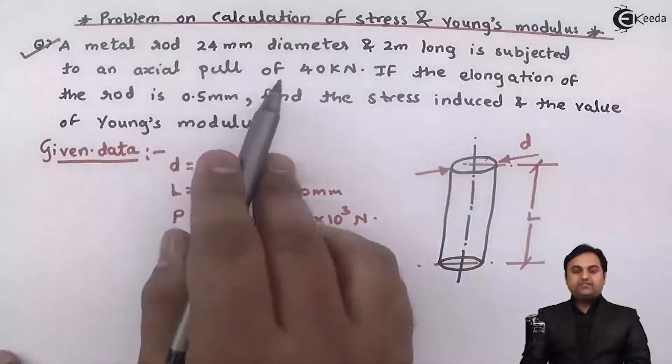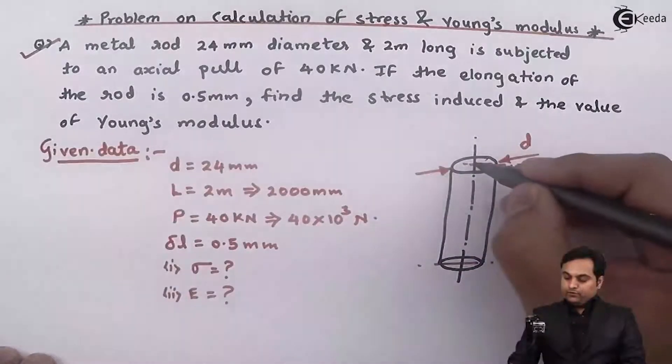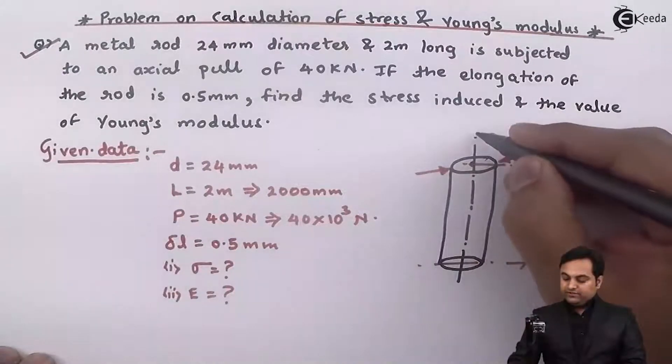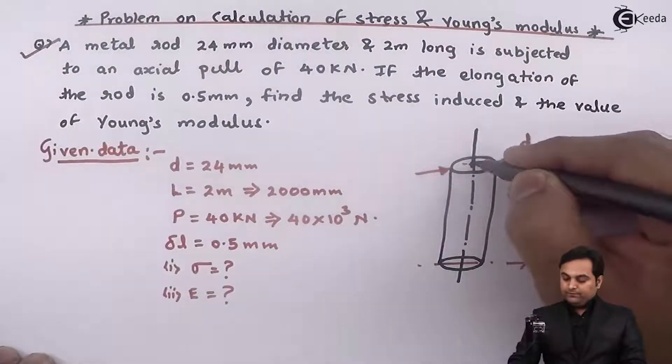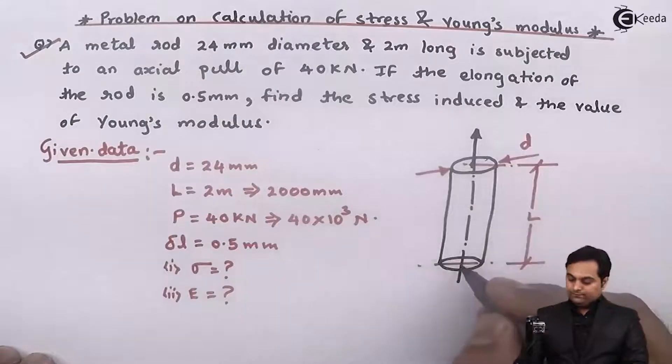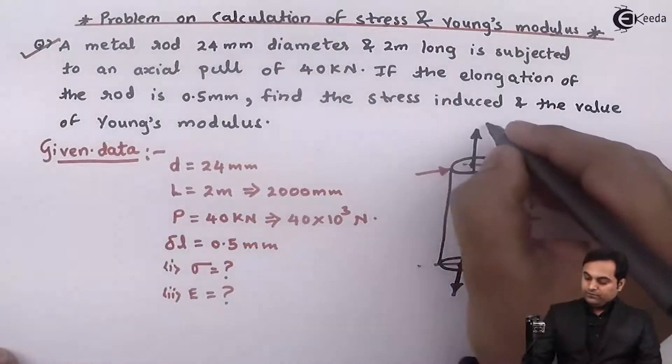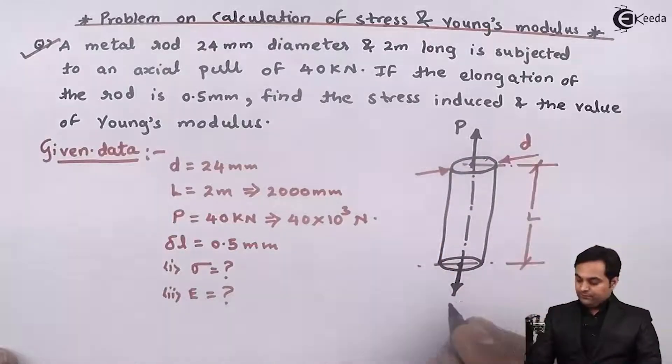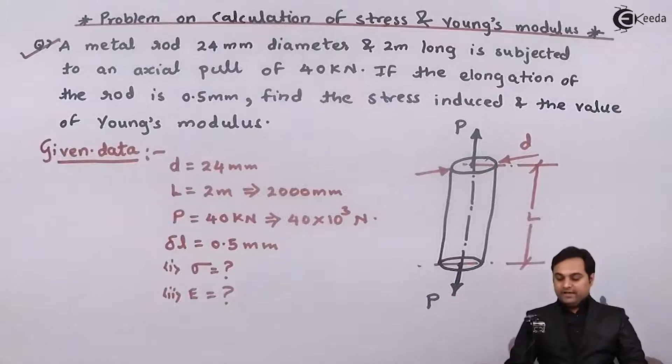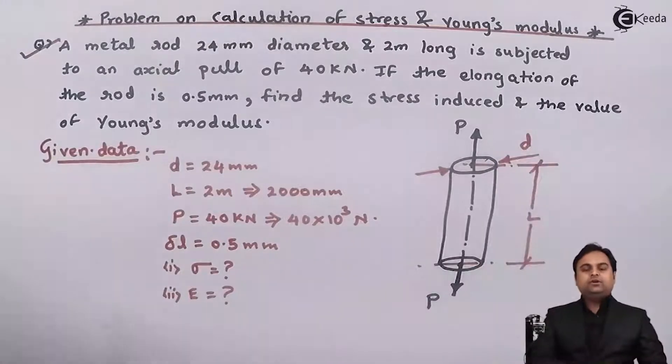So on both the sides we are having pull type of load. So here we have pull type of load on both the sides and because of this pulling action what will happen is the length will go on increasing and diameter will go on decreasing.